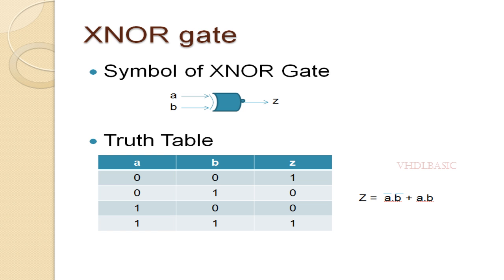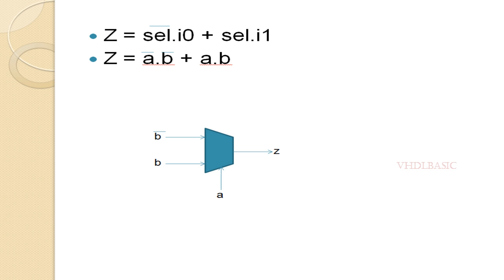Now we are going to implement the XNOR gate using the 2:1 MUX. Instead of Select, I am going to connect A. In place of I0, I am going to connect B-bar. Instead of I1, I am going to connect B. So whenever A is zero, output will be B-bar, and whenever A equals one, B will be assigned to output Z.